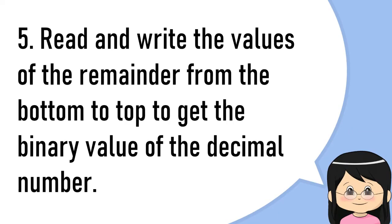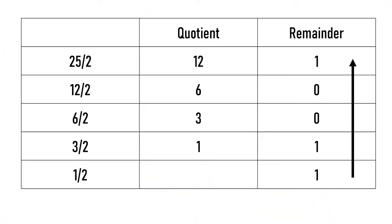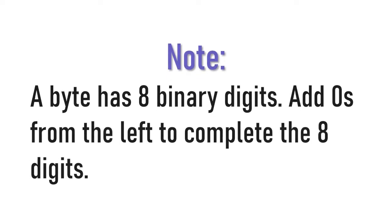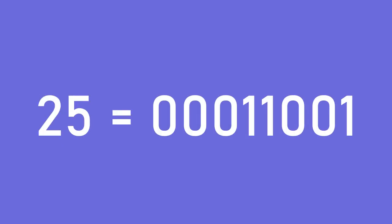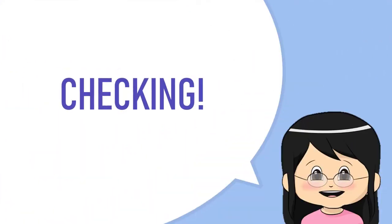Repeat the steps until you get a quotient of zero. Then read and write the values of the remainder from the bottom to the top to get the binary value of the decimal number. Take note: a byte has eight binary digits, so add zeros from the left to complete the eight digits. So 25 is equal to 00011001.